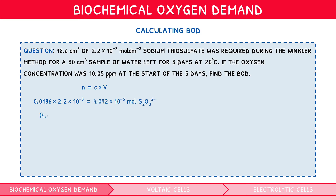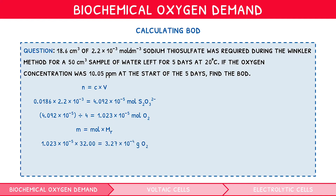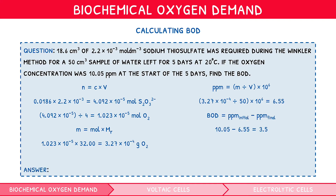Then, we divide this value by 4 to give the moles of oxygen as 1.023 × 10⁻⁵. Using the formula mass = moles × molecular mass, we substitute in this value and multiply by the molecular mass to get a mass of 3.27 × 10⁻⁴ grams. Substituting in our values for mass and volume and multiplying by 10⁶, we get an oxygen concentration of 6.55 parts per million. Since the question asks for BOD, we simply subtract our value from the original concentration, 10.05, which gives the BOD of 3.5.